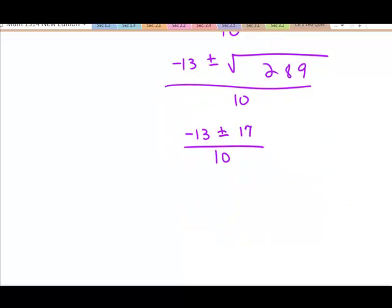All right. So we have two things. We have either negative 13 plus 17 over 10 or negative 13 minus 17 over 10.